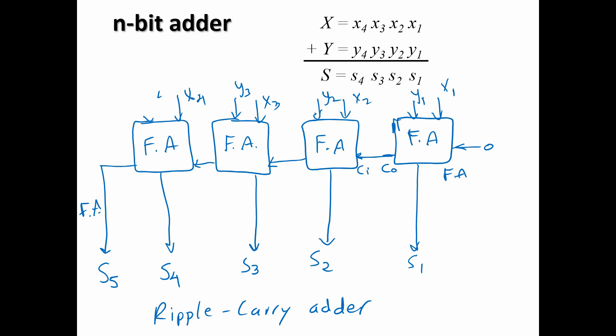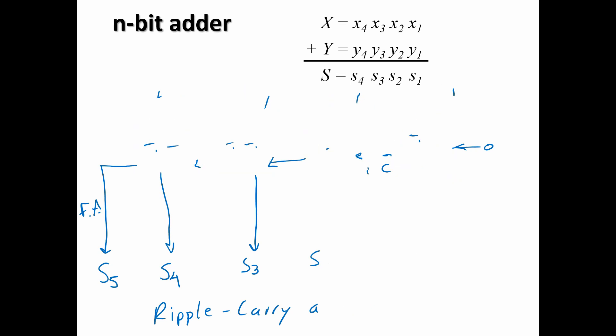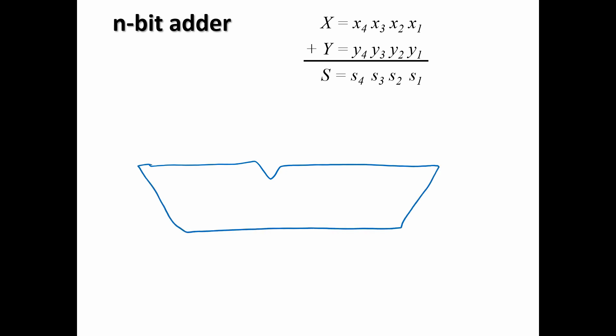If we want to redraw this into just one block, let me erase all of this. We can draw one block. And so we're going to draw an n-bit adder. So inside of that we have all the full adders that we saw. So we can go from x1 up to xn, y1, y2, yn. And of course we have our sums.